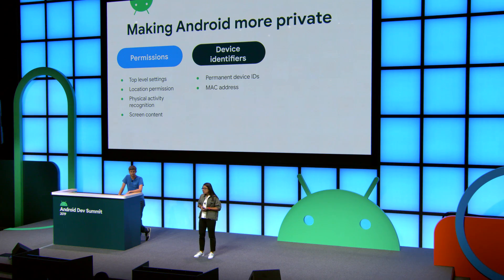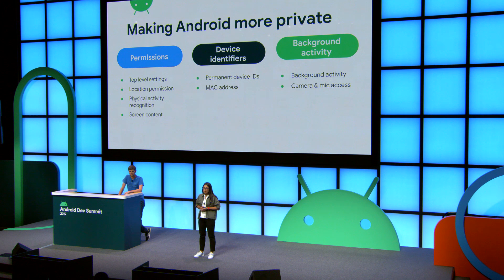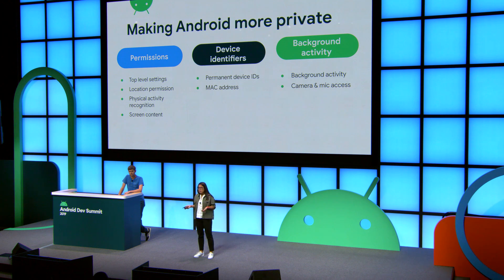Looking at device identifiers, we restricted access to dangerous hardware IDs and randomized MAC address by default. Looking at background activity, we restricted background activities launching from the background, and in Android 9 we restricted access to background mic and camera. This is just a small flavor of some of the changes that we've made to Android. But today we're actually here to just talk about permissions, so I'm going to hand it over to Philip who's going to go through more details about some of the changes in Android 10.